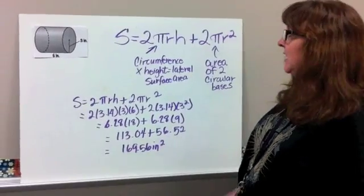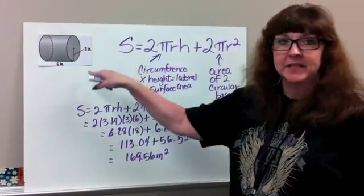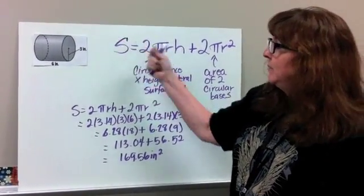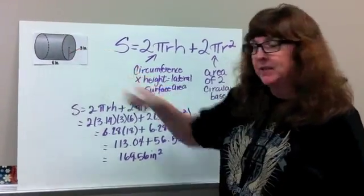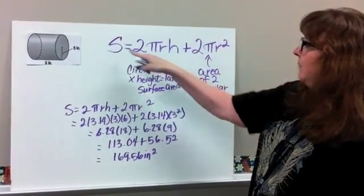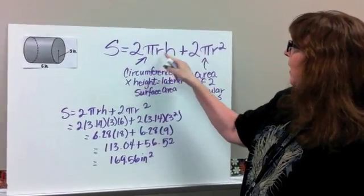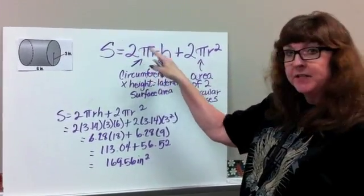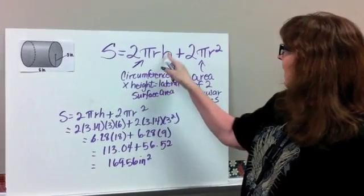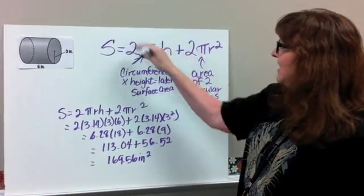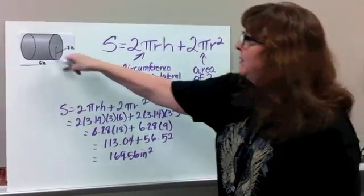Okay, we just looked at how you find the surface area of a cylinder by taking it apart and having the two circles in the middle rectangle. Now, you can use the formula, where the surface area of the cylinder is 2πrh, which is actually the circumference, which we found with the net, times the height, and that's the lateral area. That's this one piece right here,